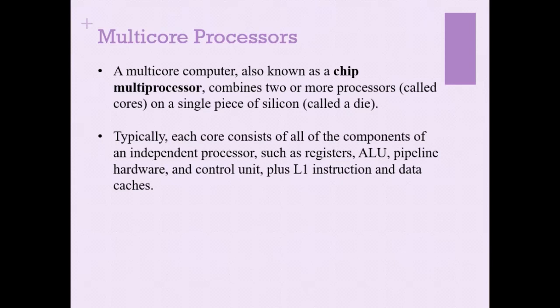When we talk about multiple cores, each core consists of components of an independent processor. An independent processor normally has registers, ALUs, pipeline hardware, and a control unit, plus L1 instruction and data caches. Whenever more than two cores are fabricated on a single chip, we call that a multi-core processor.